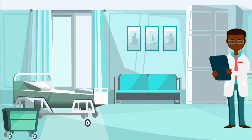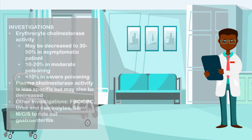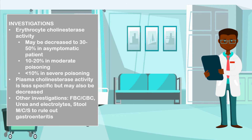At the hospital, the doctor attending to John orders some investigations. Investigations in organophosphate poisoning include erythrocyte cholinesterase activity, which may be decreased to 30 to 50 percent in asymptomatic patients, 10 to 20 percent in moderate cases, and less than 10 percent in severely poisoned patients. You may also do plasma cholinesterase activity, which is less specific but also decreased. Other investigations include a full blood count, urine electrolytes, and stool microscopy culture and sensitivity to rule out gastroenteritis.